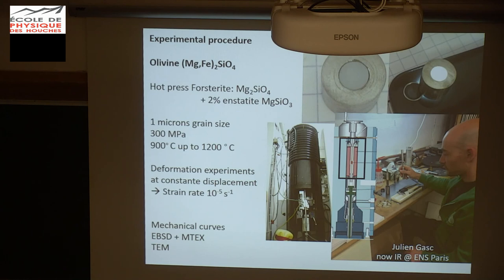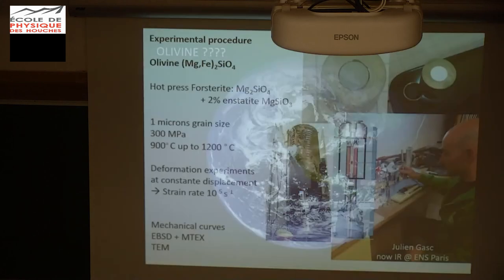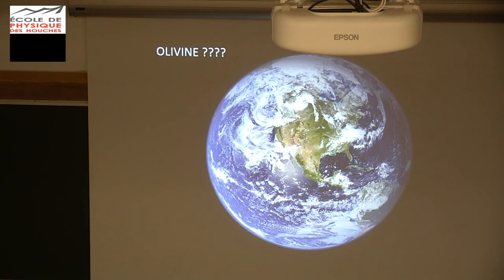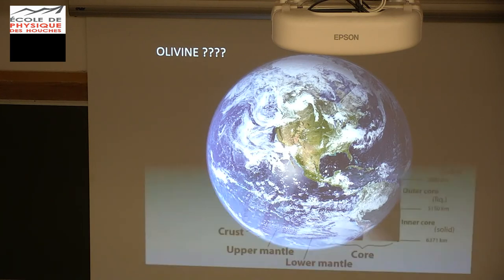We have a deformed forsterite, which is the magnesium end-member of the mineral called olivine, which contains magnesium and iron. This is an orthorhombic silicate. Why olivine? I'm a geologist — why geologists are obsessed by olivine, at least a part of them.